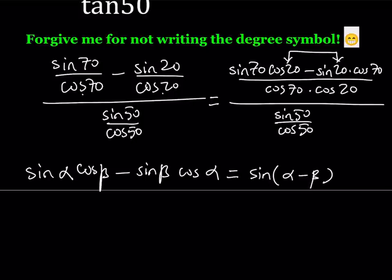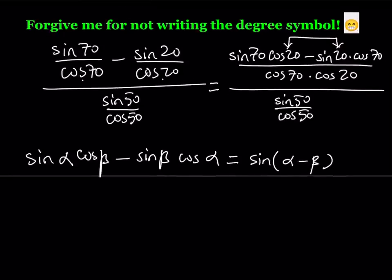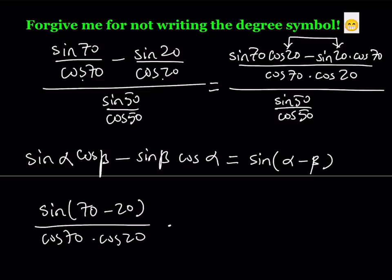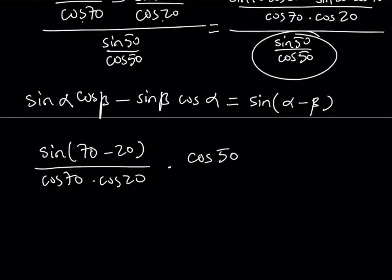So that's the sum and difference identities. So that means the top of the top, the numerator of the numerator, can be written as sine of 70 minus 20. Okay, great. We'll simplify that in the next step. That is divided by cosine of 70 times cosine of 20. And of course, the denominator here will be flipped and multiplied. That gives me cosine of 50 divided by sine of 50.